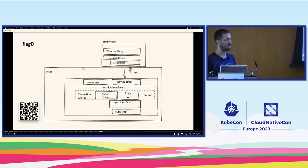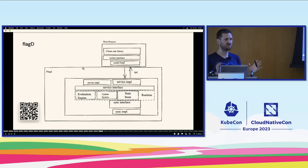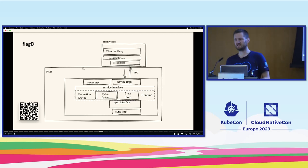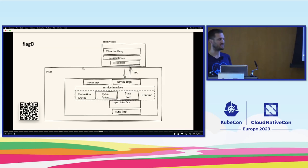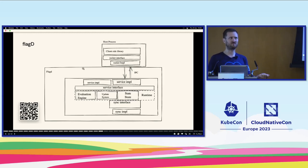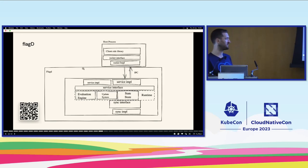That initial napkin diagram evolved into a more sturdy service called flagd — there are QR codes throughout so feel free to check out the project on the Open Feature GitHub. flagd embodies the idea that if we run feature flags as a native process rather than in a web browser, we suddenly provide accessibility for feature flags in many places we didn't have before. I could run it in Ubuntu, read feature flags locally off disk — and soon enough I was turning kernel modules on and off with feature flags, which probably wasn't a great idea.